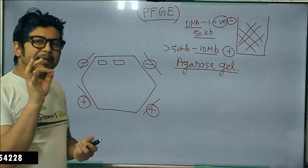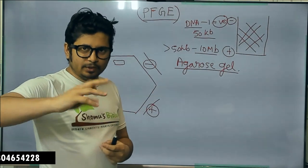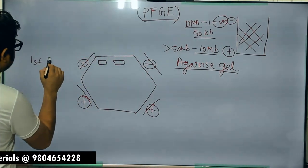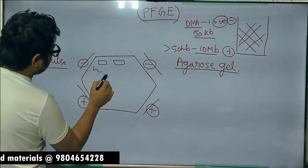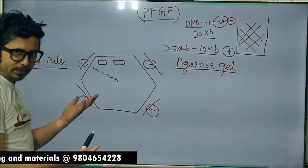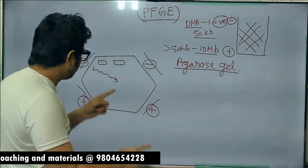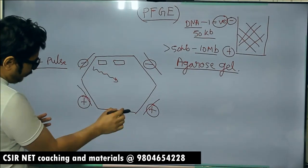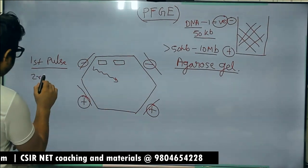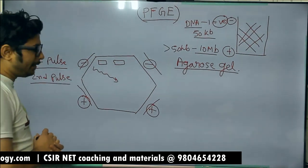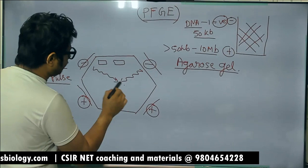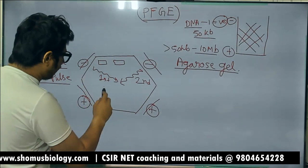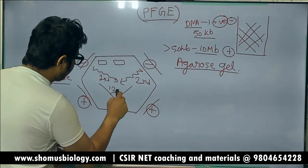We apply a pulse of electric field with a rotating frequency over time. In the first pulse, the direction of DNA movement is from the minus electrode to the plus electrode, since DNA is negatively charged. Then we move to the second pulse, where the direction of movement shifts to a different minus-to-plus path. The net movement between first and second pulse creates an angle — in this picture, a 120-degree angle.